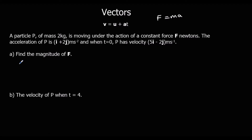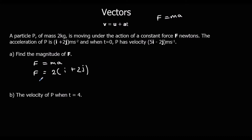So part a says find the magnitude of f, so the force. So f equals ma, and f equals m, which is 2, times a, which is i plus 2j. So f is 2i plus 4j.